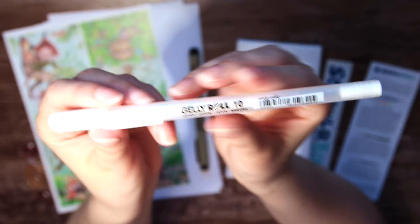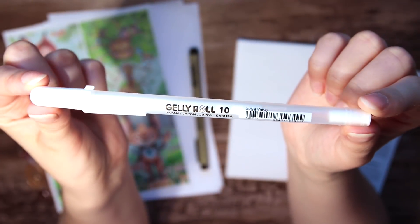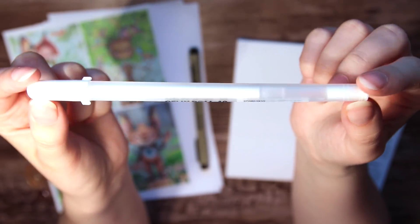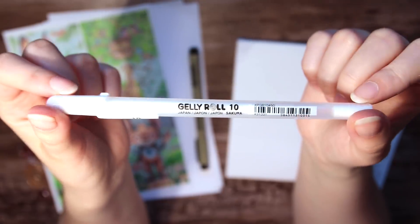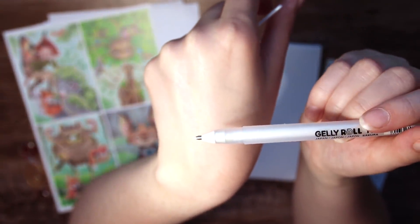Then we have a Gelly Roll 10 Pien and I'm gonna stop now. I used the Gelly Rolls a lot before but they aren't always working that great for me, but perhaps this one that apparently has a bigger nib will work better. I don't know, we'll see.